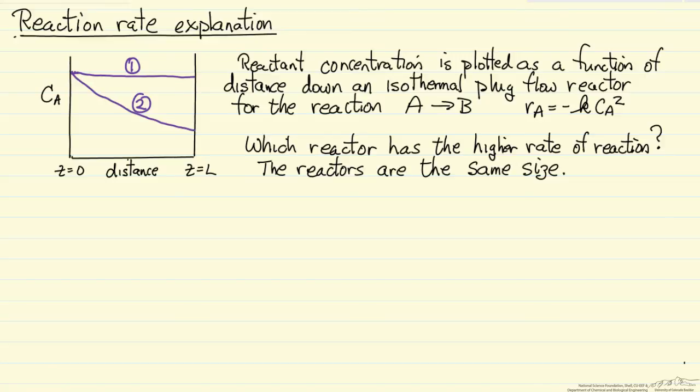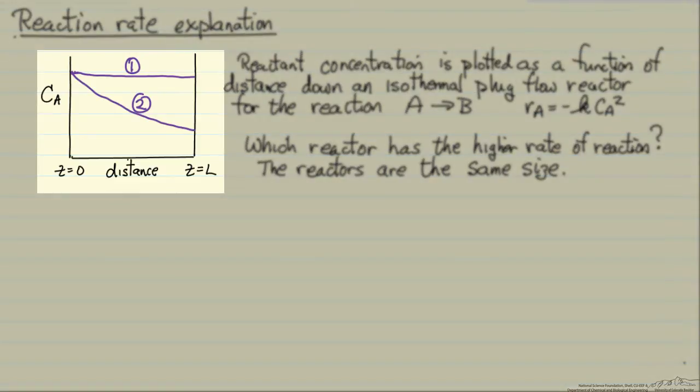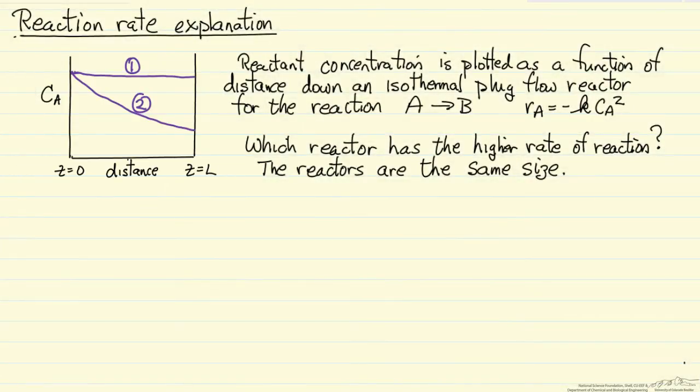I'm going to explain the idea of reaction rate by looking at a couple of specific examples to make clear what we mean when we ask, in this case, which reaction rate is higher. So what I've plotted is the concentration of reactant A as a function of distance down an isothermal plug flow reactor.